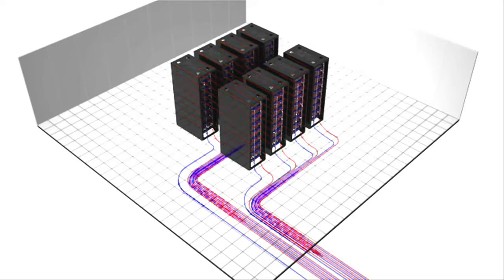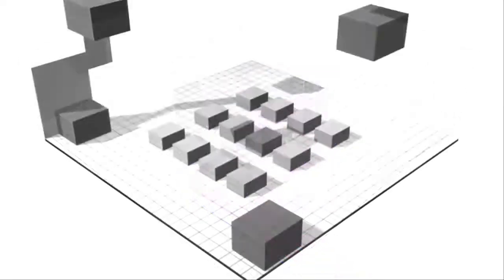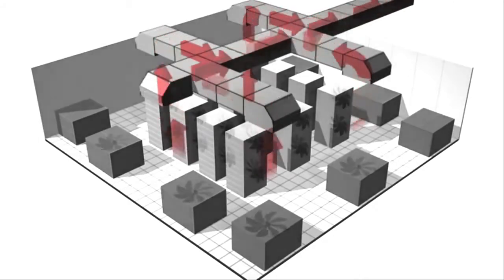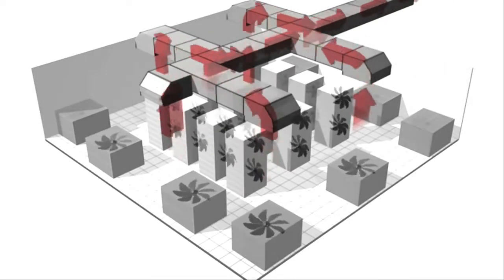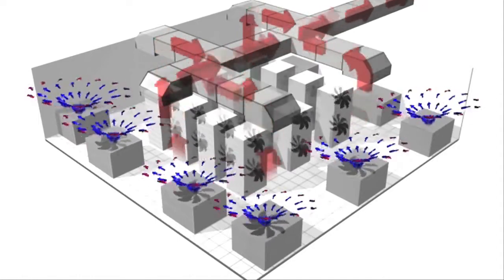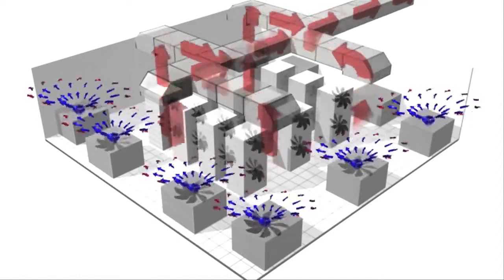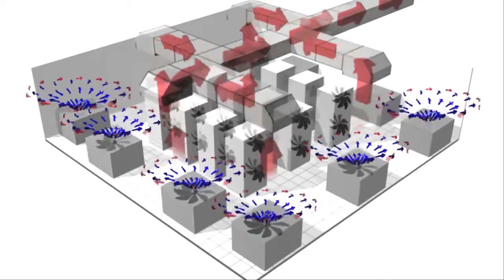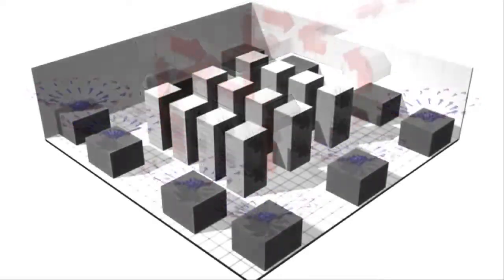In traditional data centers, fans blast air to keep servers from overheating. This process requires extensive ductwork, massive supplies of power, and plenty of breathing room inside the server chassis and between server racks. As a byproduct, fans also produce their own heat and often hazardous noise levels.